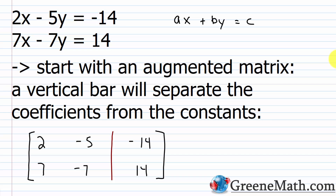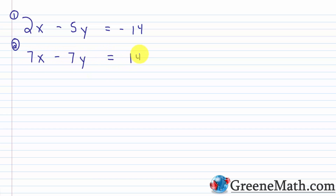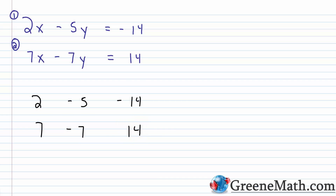Let's return to our original system: 2x minus 5y equals negative 14 (equation one), and 7x minus 7y equals 14 (equation two). The augmented matrix is: row 1 has 2, negative 5, negative 14; row 2 has 7, negative 7, 14, with a vertical bar separating coefficients from constants. Our goal is ones down the diagonal and a zero below.